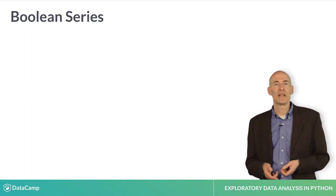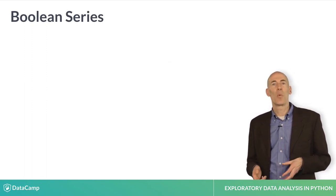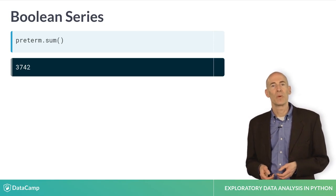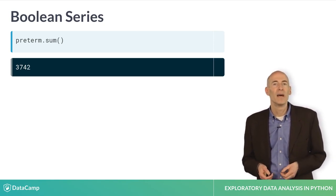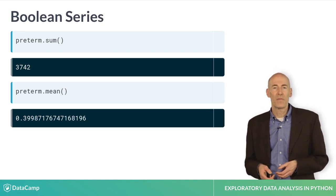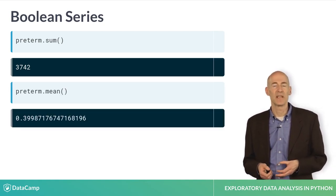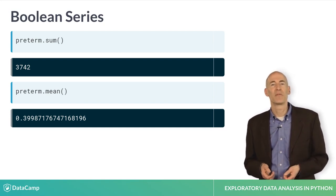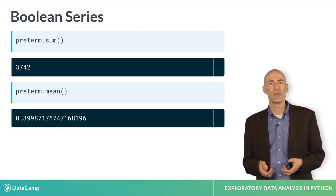If you compute the sum of a Boolean series, it treats true as 1 and false as 0. So the sum is the number of trues, which is the number of preterm babies, about 3700. If you compute the mean, you get the fraction of trues. In this case, it's close to 0.4. That is, about 40% of the births in this data set are preterm.